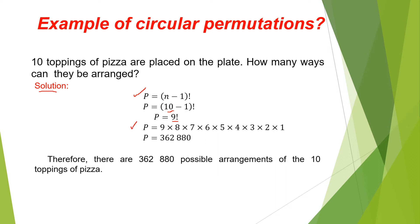Simplifying 9 factorial: P equals 9 times 8 times 7 times 6 times 5 times 4 times 3 times 2 times 1, equals 362,880. Therefore, there are 362,880 possible arrangements of the 10 toppings of pizza.